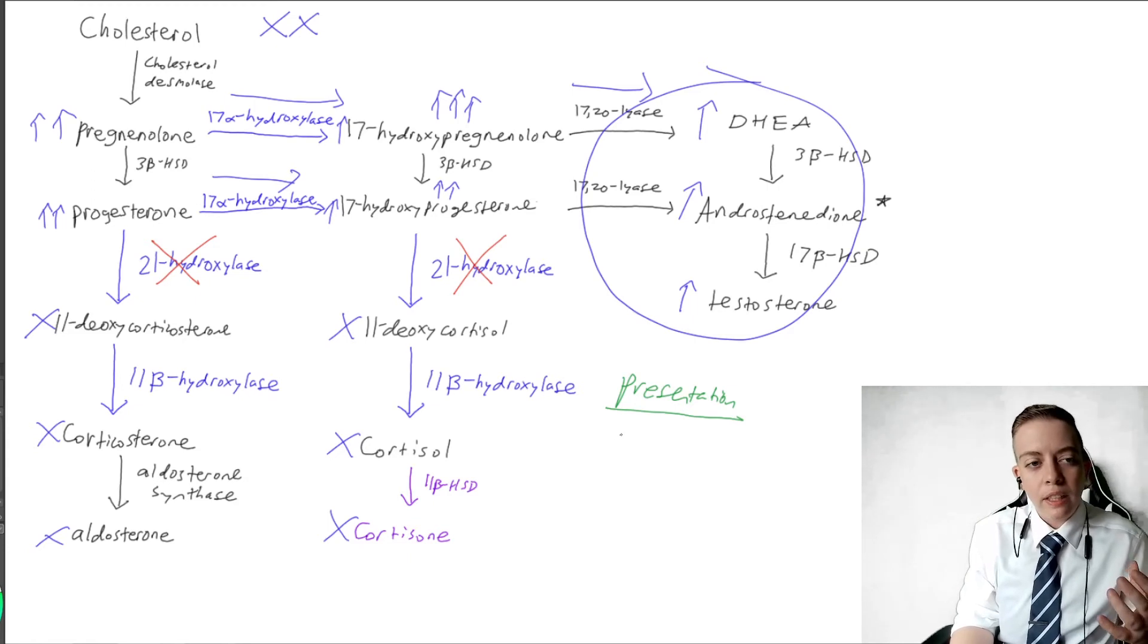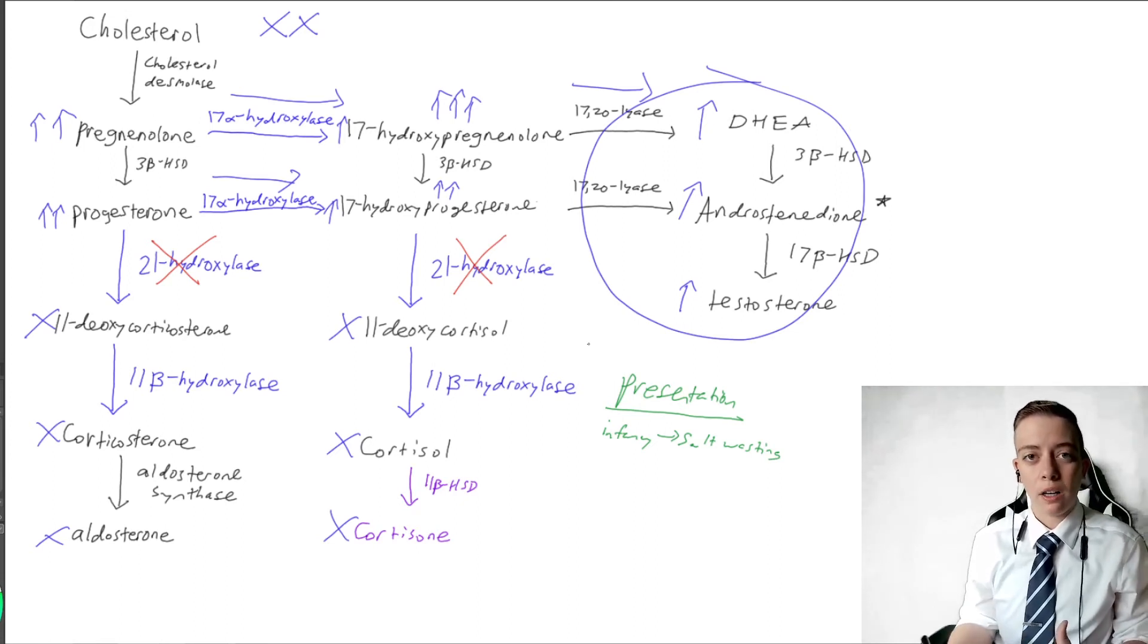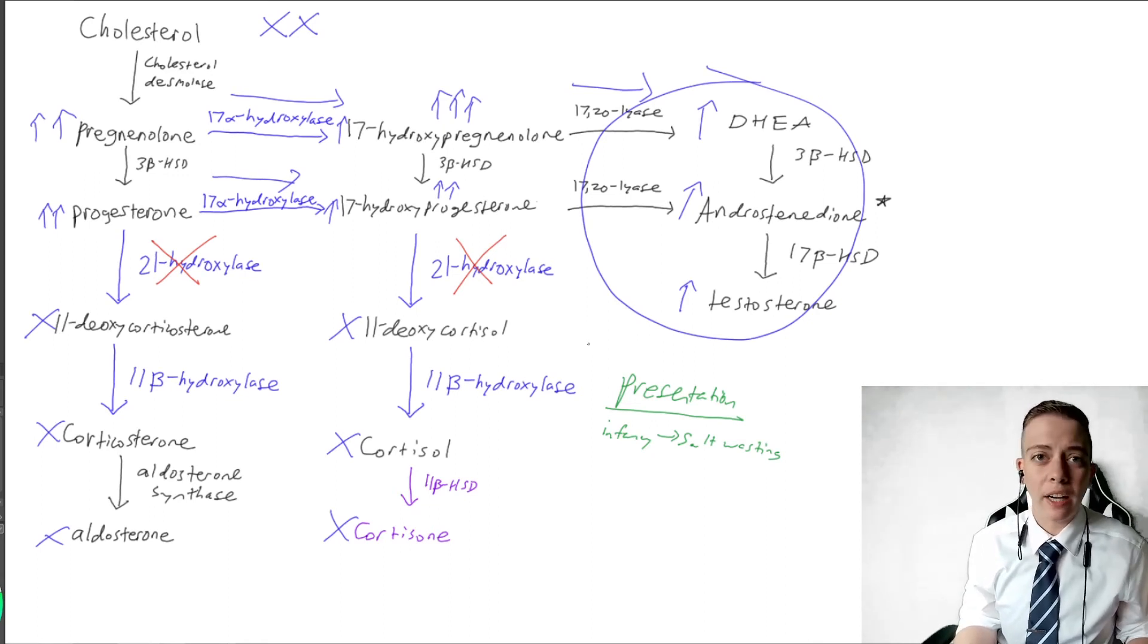So if this occurs during infancy, so let's say they have this deficiency their entire life, in infancy this is going to present as salt wasting. Aldosterone is meant to help you retain body water, and since we don't have aldosterone, you can't retain body water, so you're going to be very dehydrated. And aldosterone is also going to help you absorb sodium, so salt absorption. So you're going to have low salt levels and low water levels. You're going to be constantly dehydrated.